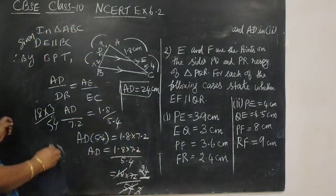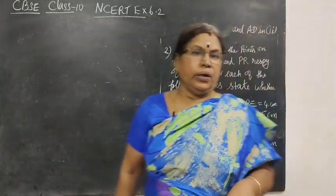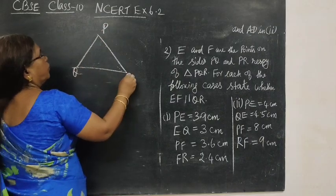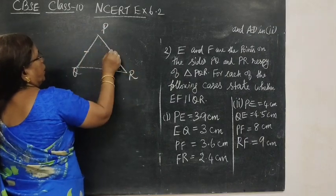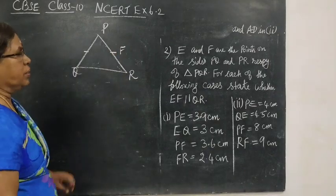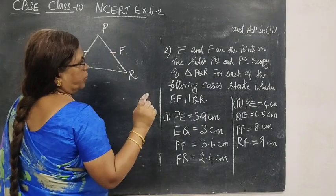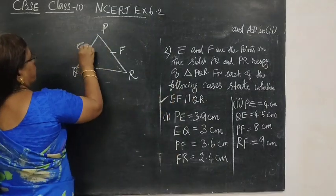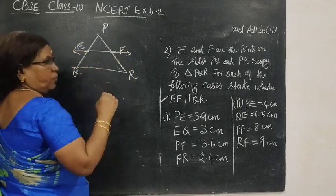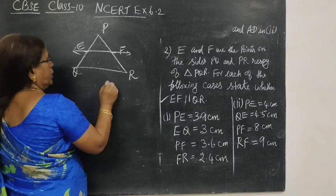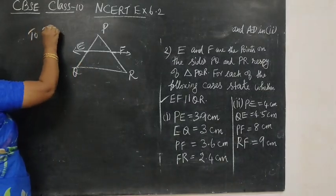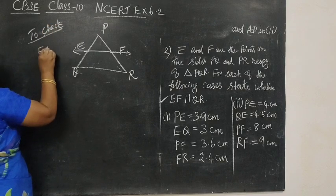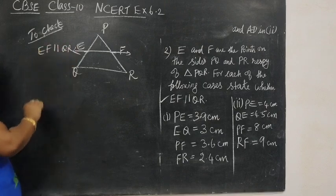Question number 2. On the sides PQ and PR, E and F are points. This is PQR. E and F are the points on the sides PQ and PR respectively. For each of the following cases state whether EF parallel to QR. Join EF. We want to prove or to check EF parallel to QR.